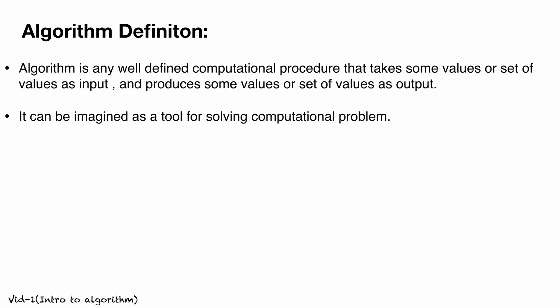Now, as we have some knowledge about what an algorithm is, let's define it formally. An algorithm is a well-defined computational procedure that takes some values or set of values as input, and produces a set of values as output. In our example, the inputs are stove and pan, and the output is the omelette. It can be imagined as a tool for solving computational problems.